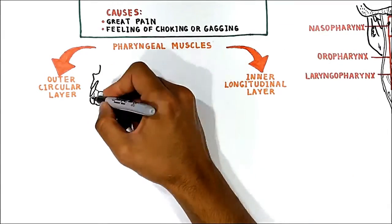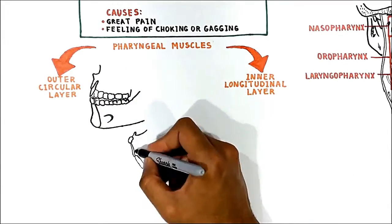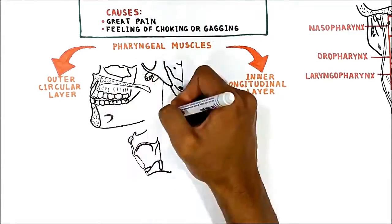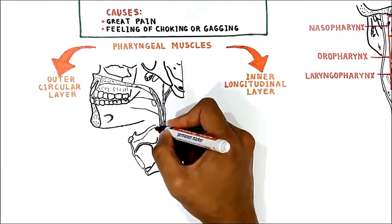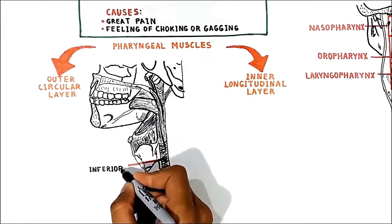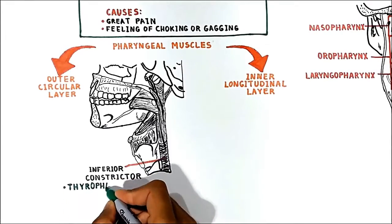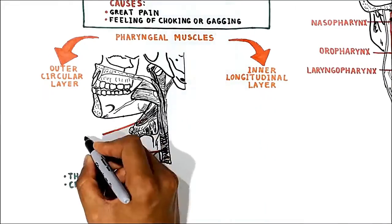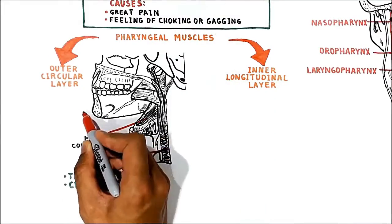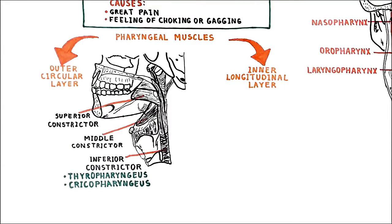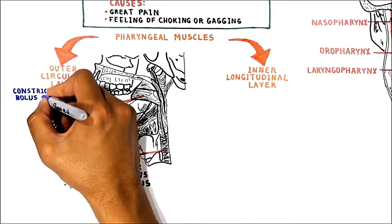Let me draw here a diagram to clearly show them. The outer circular layer includes the inferior constrictor muscle, which is further divided into thyropharyngeus and cricopharyngeus, the middle constrictor muscle, and the superior constrictor muscle. During swallowing, these muscles constrict to propel the bolus downwards.